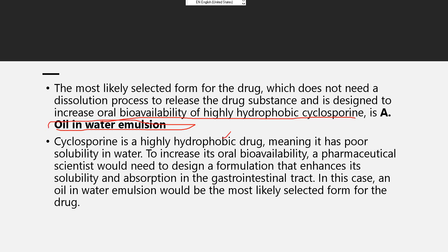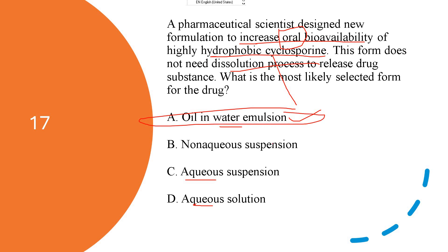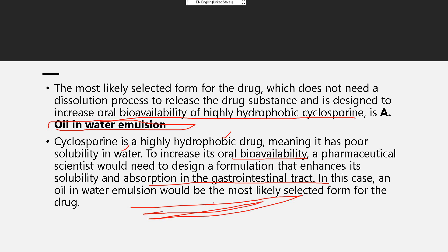Cyclosporine is a highly hydrophobic drug, meaning it has poor solubility in water. A pharmaceutical scientist would need to design formulations that enhance its solubility and absorption in the gastrointestinal tract. In this case, an oil-in-water emulsion would be the most likely selected form.